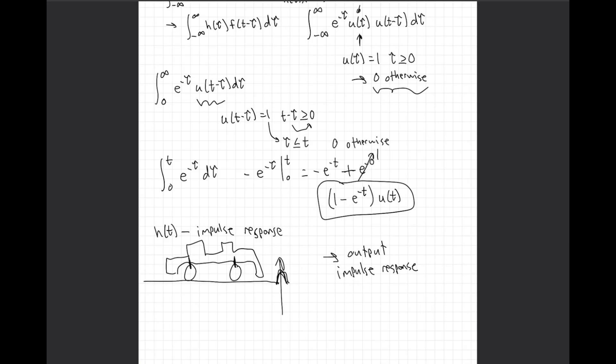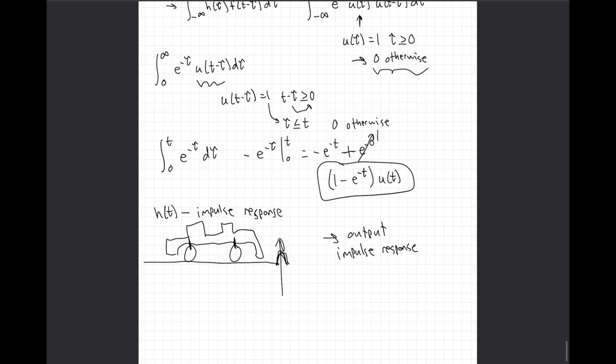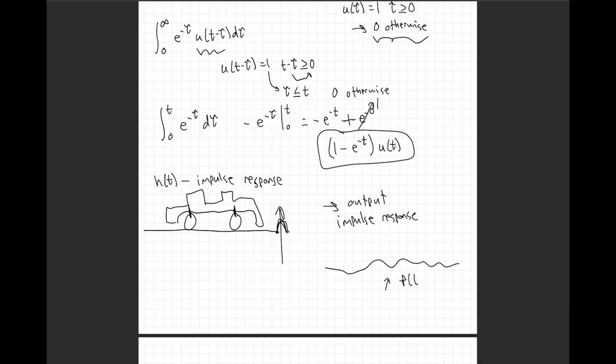And if we define this as a linear time invariant system, then with that impulse response, we can know how this car is behaving if it's driving on any sort of road. And we could define that as f of t. If we convolve f of t and h of t, we get y of t, the output. And this is really cool because we could give any input after we know the impulse response to find the output with this convolution. Pretty cool stuff. Thank you for watching.